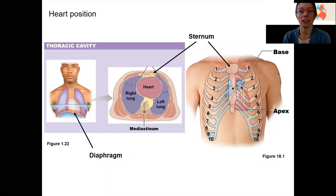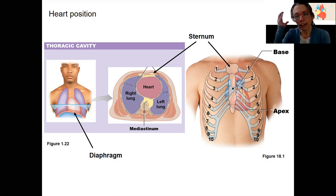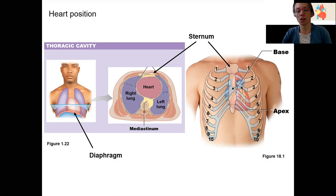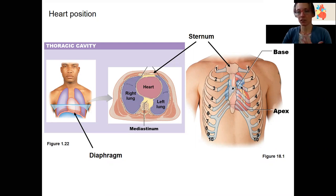Do you remember our body cavities that we talked about last semester? We've got the cranial cavity up here, and we've got the abdominal pelvic cavity — you saw these regions in the rat. The names for the regions are similar and correspond to the cavities inside of them. Cavities refer to spaces inside of our body.